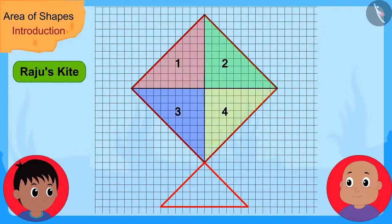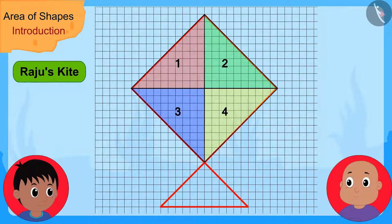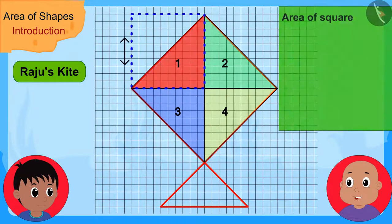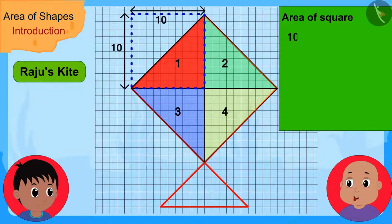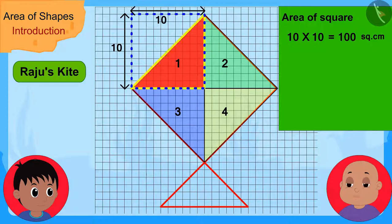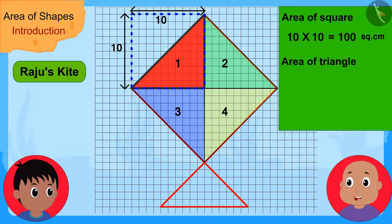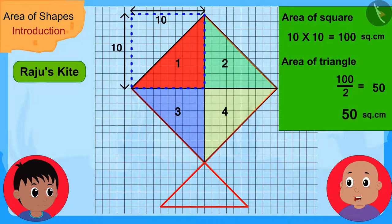Bablu first made a triangle inside the outline of Raju's kite. 'Look Raju, this triangle inside the outline of your kite is half of this square. And the area of this square is 10 times 10, or 100 square centimeters. So the area of this triangle is 100 divided by 2, or 50 square centimeters.'